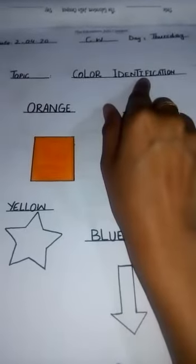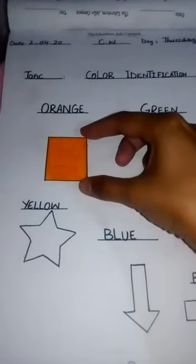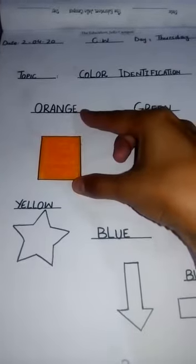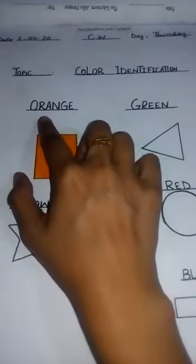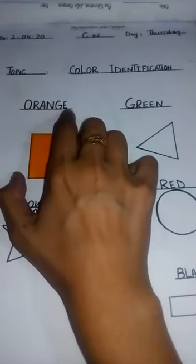Today's our topic is color identification. First, we have a rectangle given to you, and you have to choose the color and fill it. The color name you will see mentioned there. Here is orange, O-R-A-N-G-E. You have to color this object in orange.